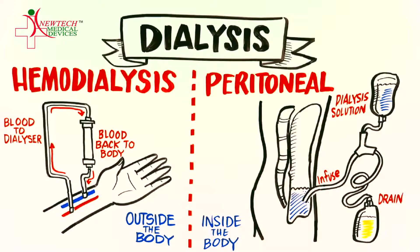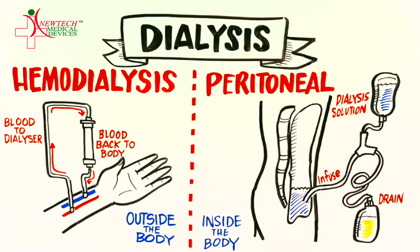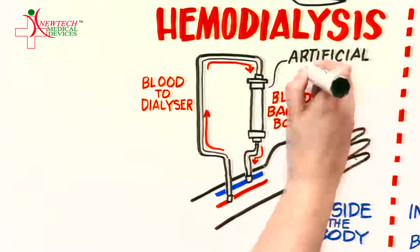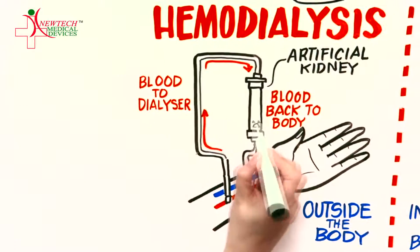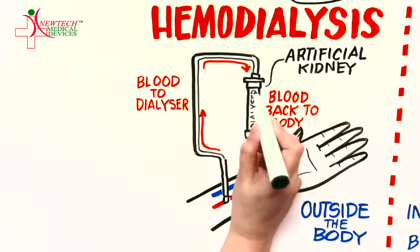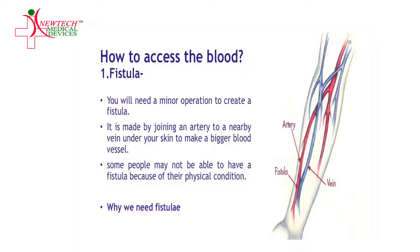Hemodialysis is when your blood is passed through an artificial kidney, which is called a dialyzer. There are three ways in which we can access the blood.